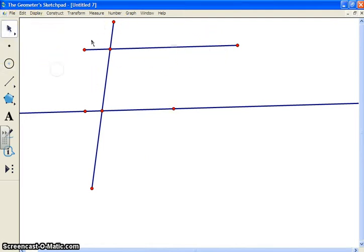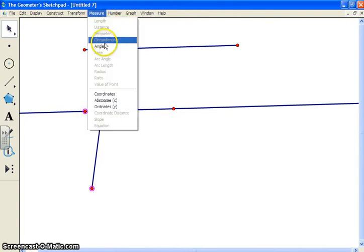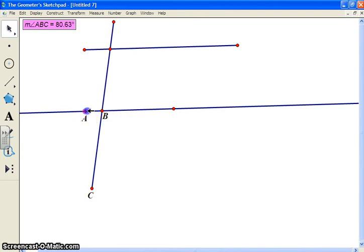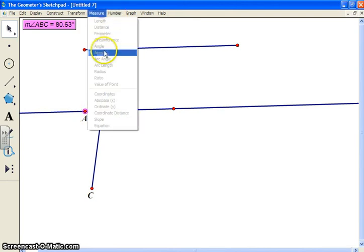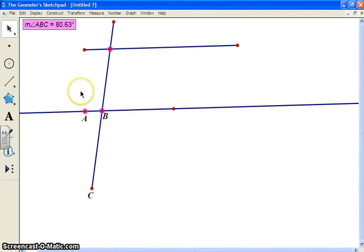So we want to go back to our selection tool, deselect everything, and one by one we can start clicking three points and measuring angles. So this is going to keep track of everything in our sketch.